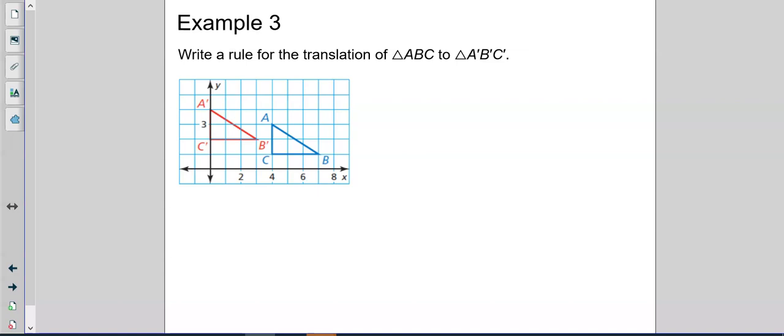Write a rule for the translation of A, B, C to A prime, B prime, C prime. So from A, right here, I'm going 1, 2, 3, 4 to the left. So that's negative 4. And up 1. I don't know why I put that. 1. Okay. That's the vector. Now, what's the rule? I did X minus 4, comma, Y plus 1. And let's look at that real quick. I'm just going to take one point. A is at 4, 1, 2, 3.